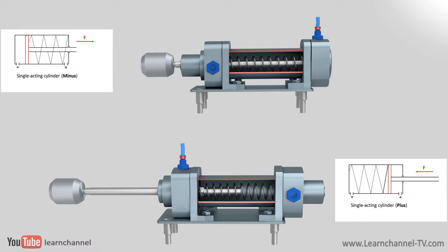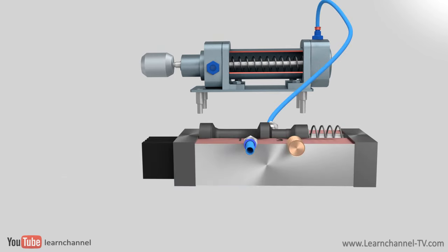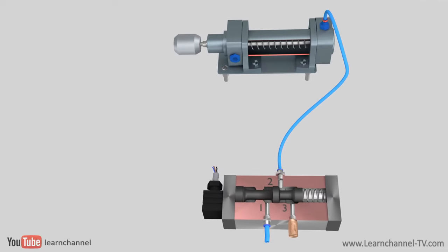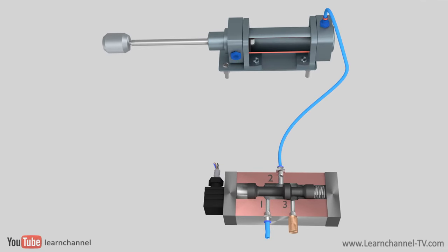Base position minus is the common one. As the single-acting cylinder has only one inlet port for the compressed air, you would use a 3x2 directional spool valve. In our example here, we use a spring-loaded directional valve. Due to the inbuilt spring, the piston returns to its base position in case of a power loss.